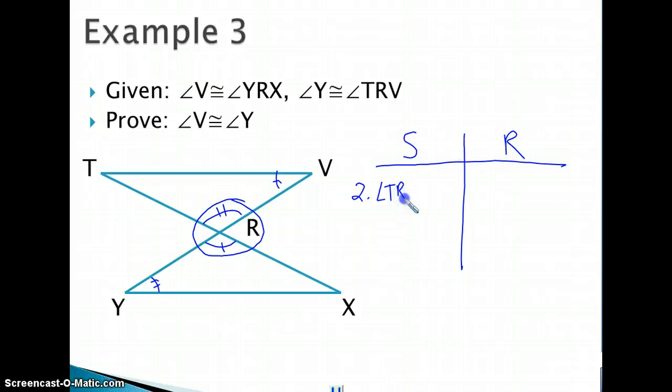So I'm going to say that angle TRV is congruent to angle YRX. And you'll notice that when I said that, I'm using the same exact order of the lettering that I used here, just to be consistent and to avoid some confusion. So that's the vertical angle theorem. And from there, I have a couple options on what I can do. If I look at the TRV, we'll go with that one, that's mentioned twice. So what that tells me in the next step is I can use the transitive property to lump YRX and angle Y together.